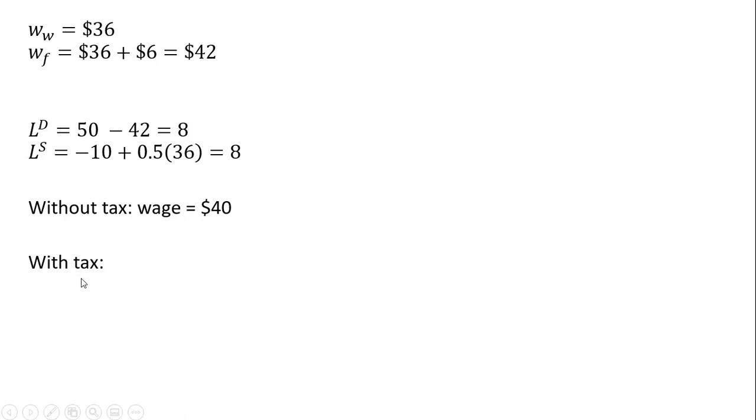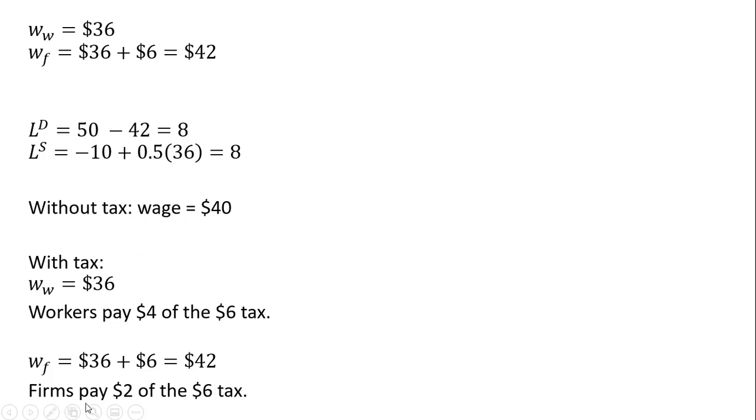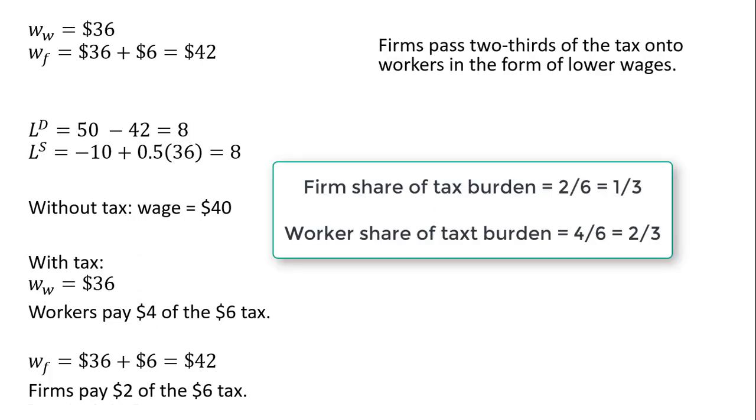Without the tax, the wage was $40. With the tax, workers get $36. So workers are actually paying $4 of this $6 tax. Firms are paying $42 and before the tax, firms were only paying $40 for labor. So firms are paying $2 of the $6 tax. So firms are able to pass two-thirds of the tax on to workers in the form of lower wages. So even though we see a firm writing a $6 check to the government, not all of that $6 is coming from the firm's pocket. $4 of it is coming from the worker's pocket in the form of lower wages.